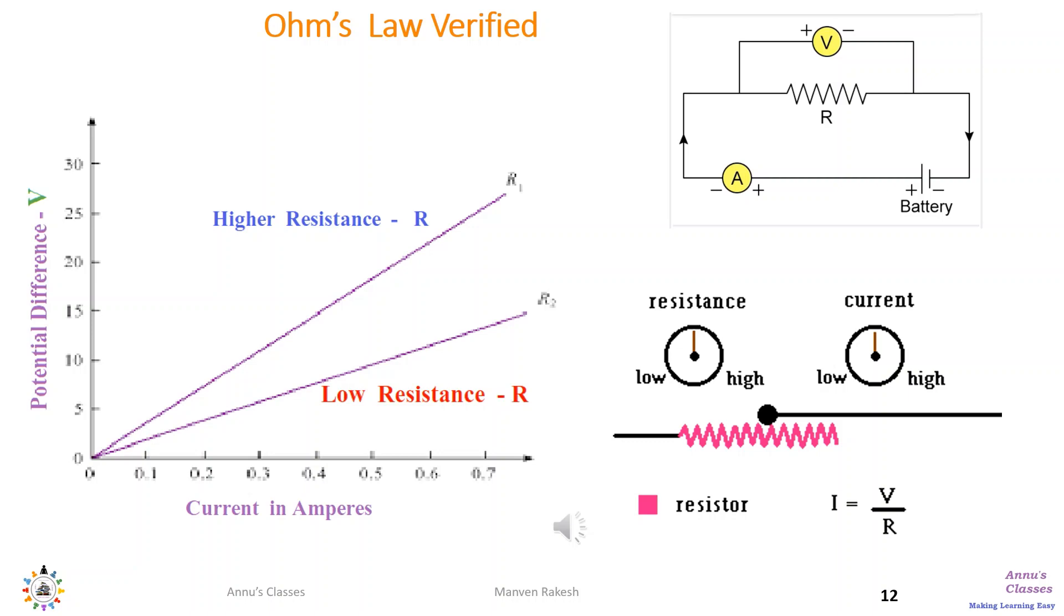Keeping R constant and changing different potentials, data is compiled for different values of V, how much current is flowing using ammeter, and then the graph is plotted. It is a straight line. Then again resistance is slightly increased. Another set of data is compiled for different values of V, I is again noted, and again the graph is plotted. This relationship is a linear relationship between V and I.